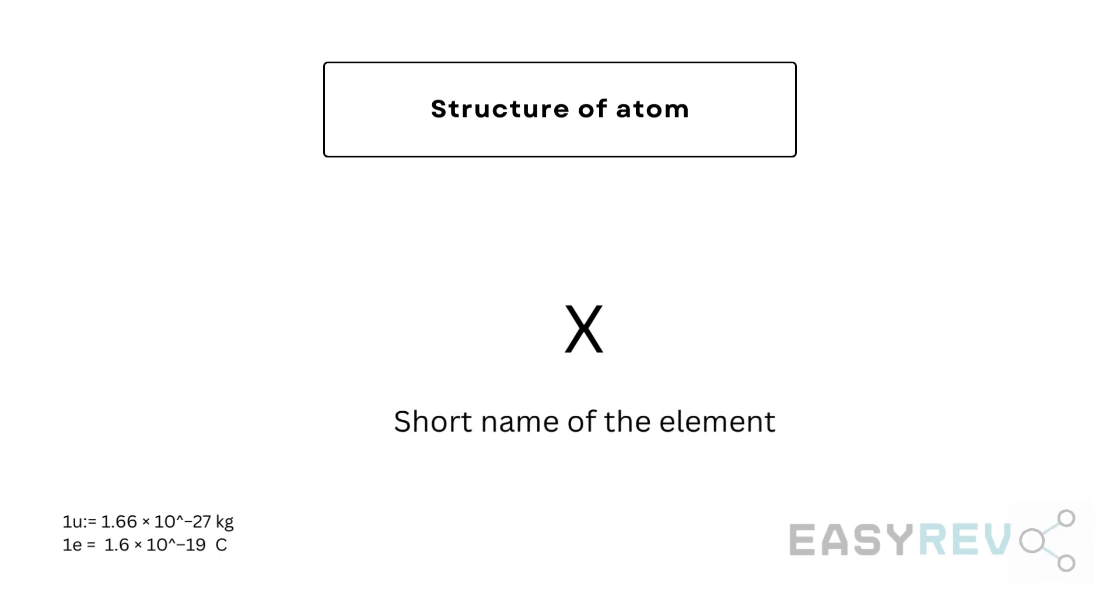X represents the short form name of the element, and Z is the proton number. And if you consider a neutral atom where the total number of positive charge should equal the total number of negative charges, in that case the proton number can also equal the total number of electrons that reside outside of the nucleus.